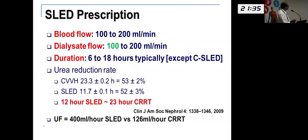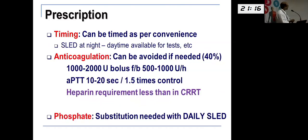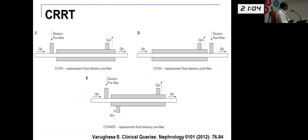Blood flow and dialysis flow are low, with large durations, and they found that about 12 hours of SLED is equivalent to about 23 hours of CRRT for removal of small molecules, with decent ultrafiltration as well. The advantages: timing can be as per convenience — some centers do SLED only at night, keeping the daytime available for investigations. You can actually avoid anticoagulation as well. The only thing is, if you do daily SLED, you need to substitute phosphate because they're prone to hyperphosphatemia.